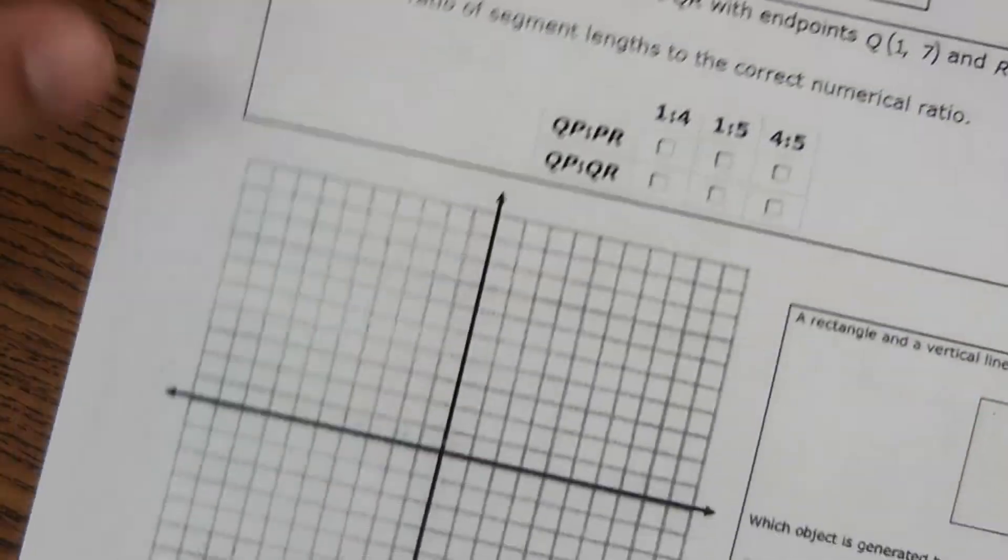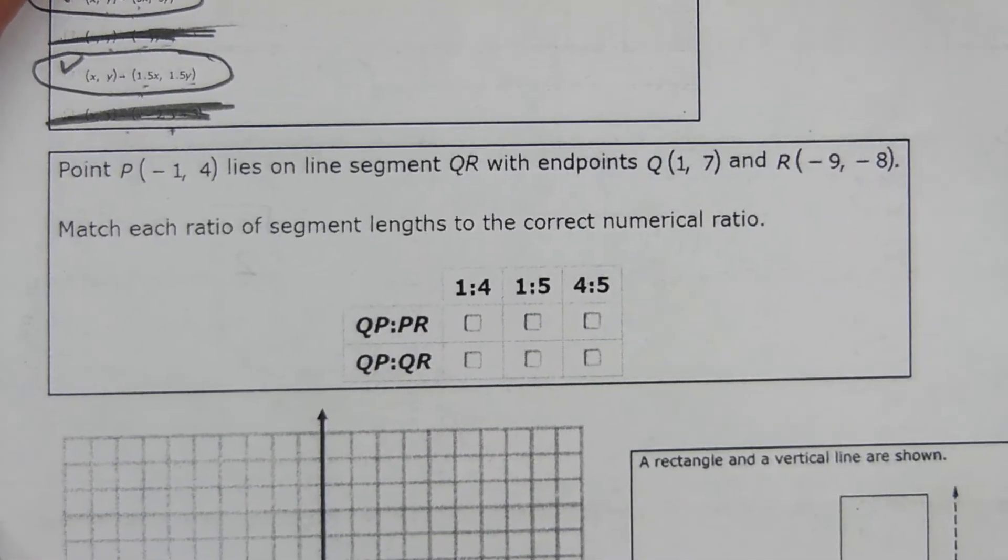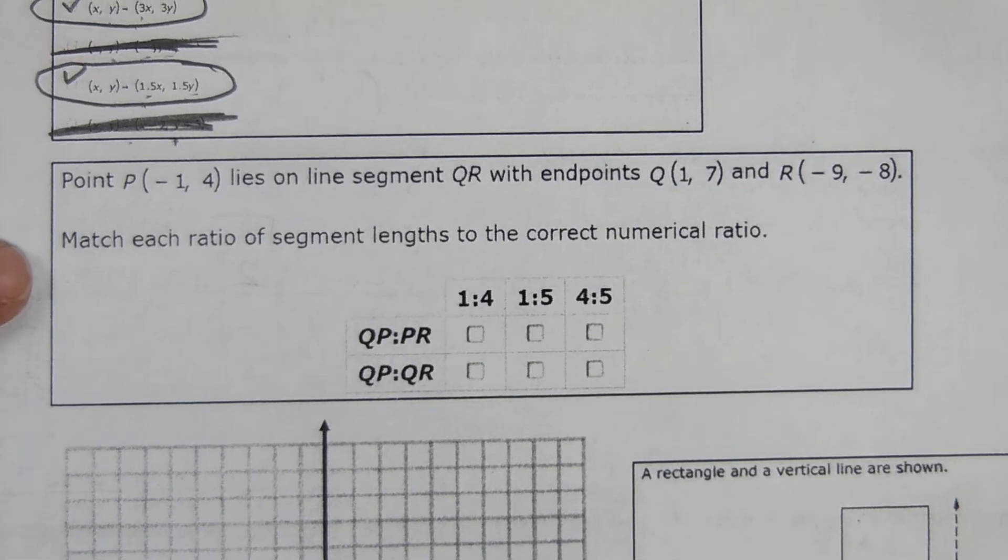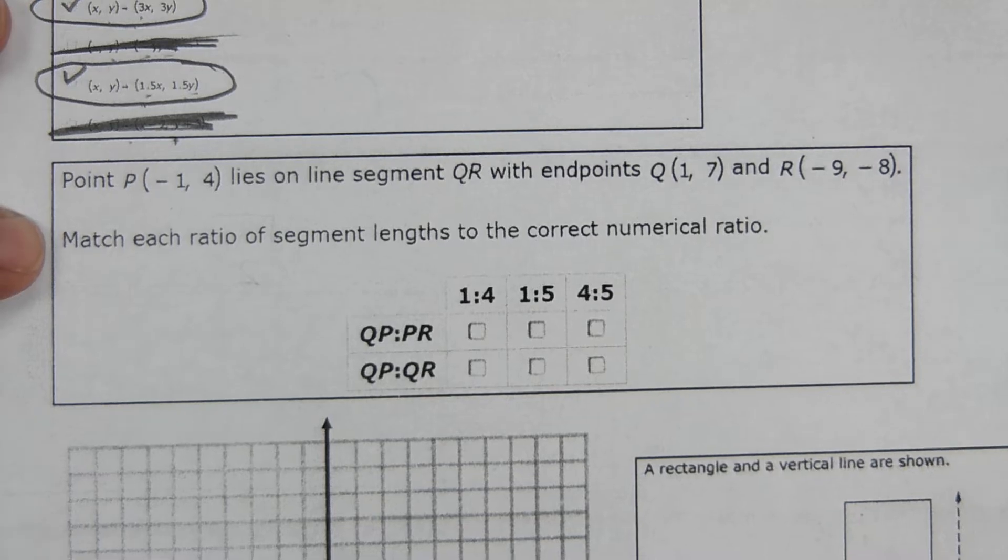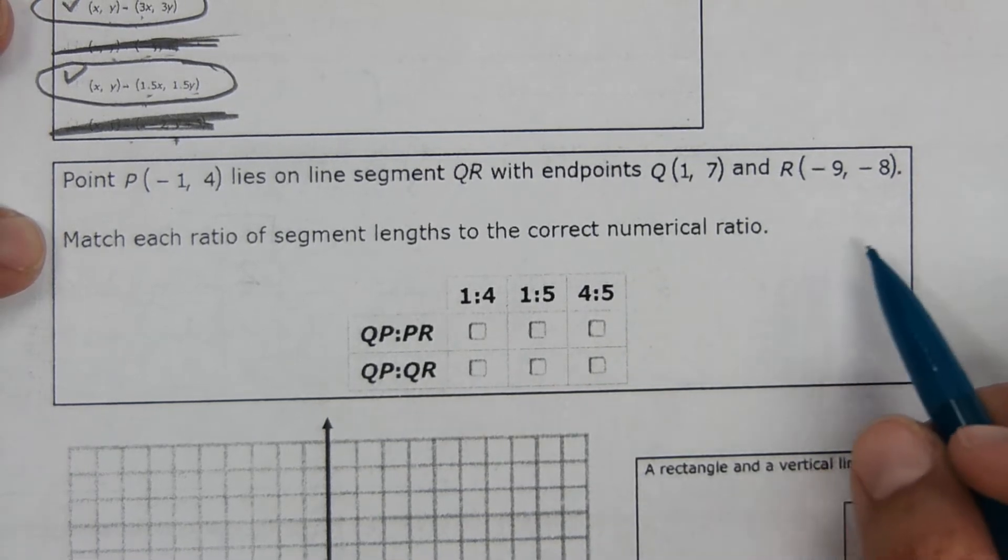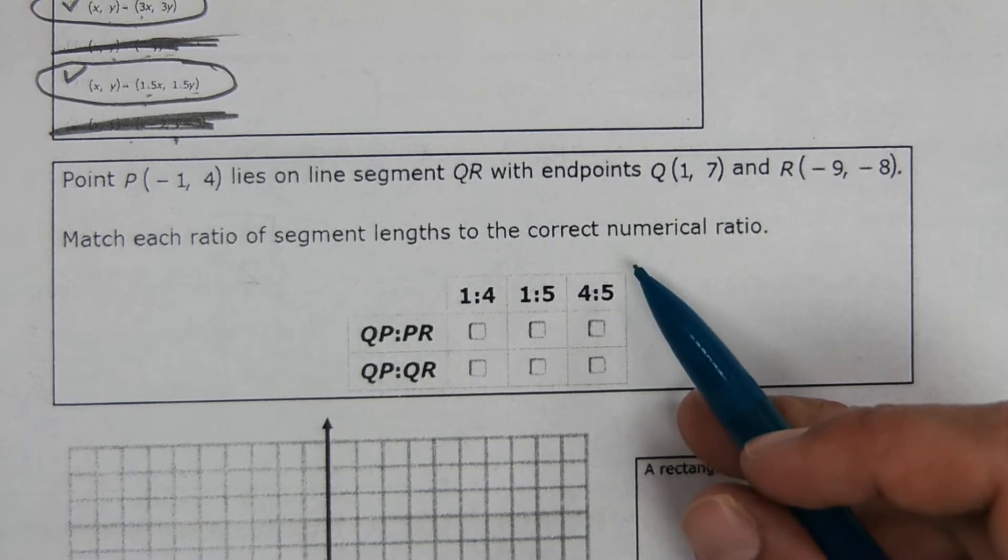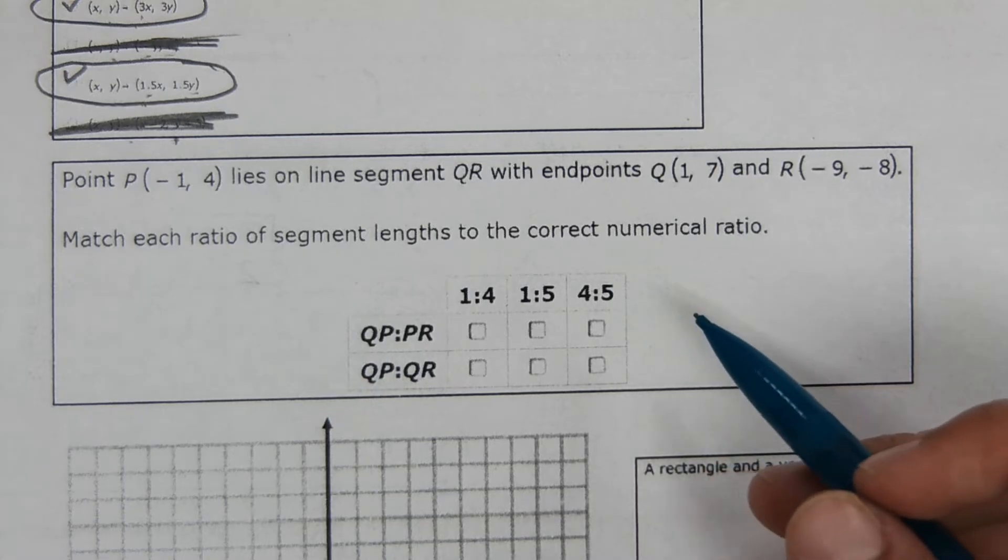The next one. Point P is at negative 1, 4, lies on the segment QR with endpoints here. Match each ratio of segment lengths to the correct numerical ratio.